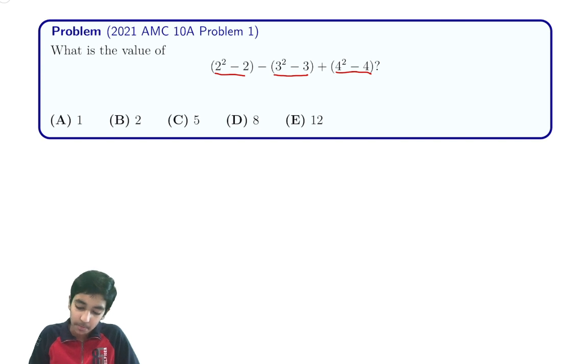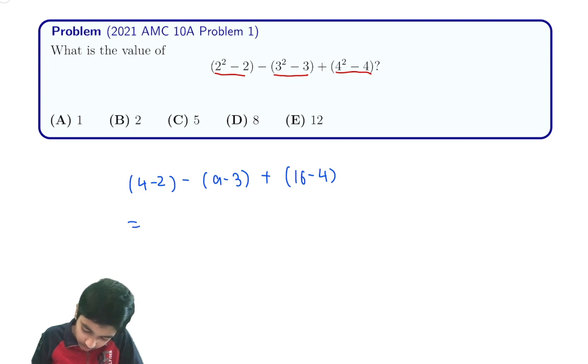Let's explore two ways to solve the problem. The first method is to evaluate each of the brackets. 2² is 4, so it's 4 - 2. 3² is 9, so it's 9 - 3. 4² is 16, so it's 16 - 4. This equals 2 - 6 + 12, which is 8. So the answer is D.